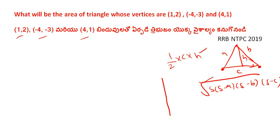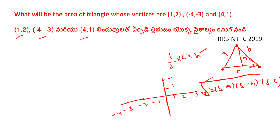Suppose we have a graph paper — this is the x-axis and this is the y-axis. The x-axis goes 1, 2, 3, 4 and minus 1, minus 2, minus 3, minus 4. The y-axis goes 1, 2, 3 and minus 1, minus 2, minus 3, minus 4.